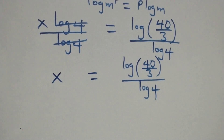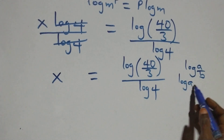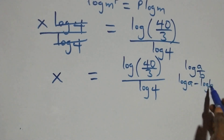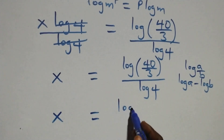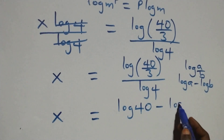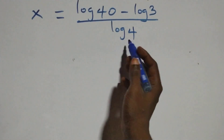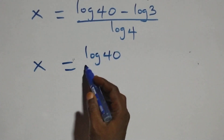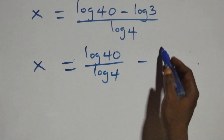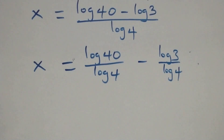Then this follows the law of logarithms: log(a/b) is the same as log a minus log b. So this becomes x equals to log 40 minus log 3, all over log 4.